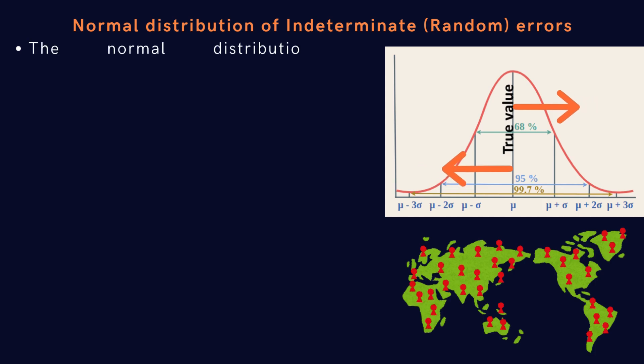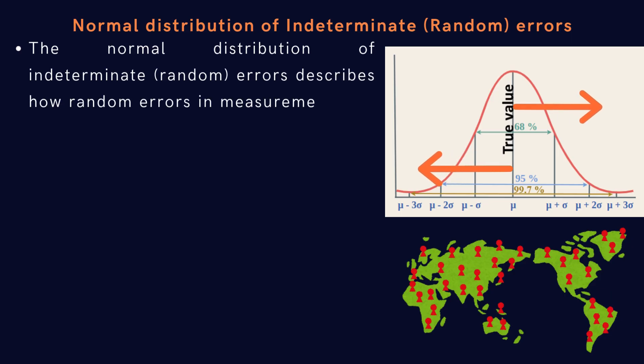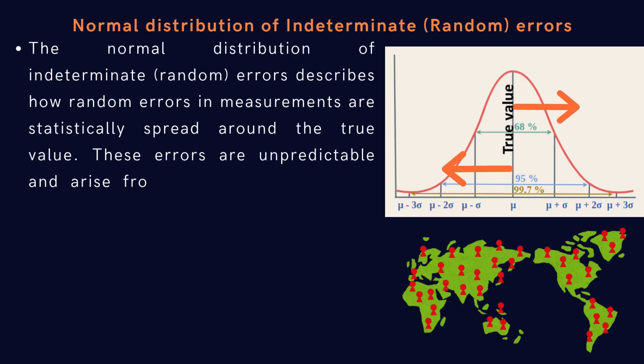Let's understand the normal distribution of random or indeterminate errors. The normal distribution of indeterminate random errors describes how random errors in measurements are statistically spread around the true value. These errors are unpredictable and arise from uncontrollable factors, such as slight fluctuations in instruments, environmental conditions, or human handling.